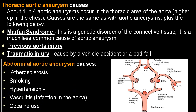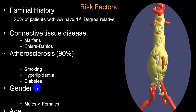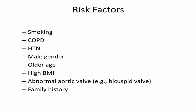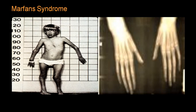Berry aneurysms are purely genetic. Atherosclerosis accounts for 90% of cases, particularly abdominal aortic aneurysms, where smoking, hyperlipidemia, diabetes, and obesity are the main risk factors. Males are more prone than females, and old age is a key risk factor. Other risk factors include COPD, hypertension, male gender, older age, high BMI, bicuspid aortic valve, family history, and coarctation of aorta.